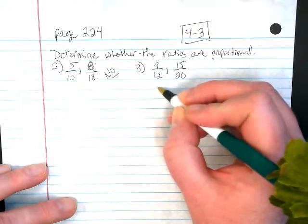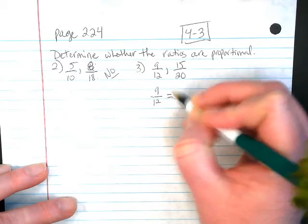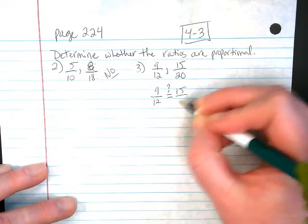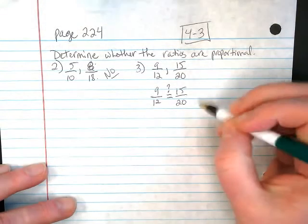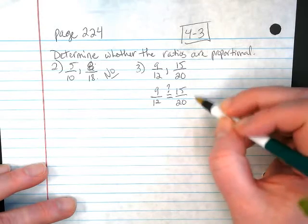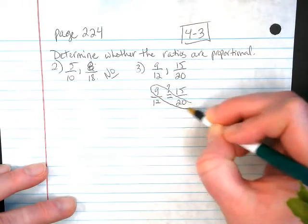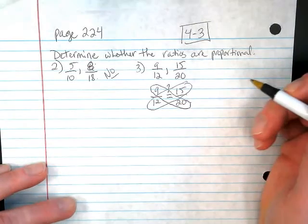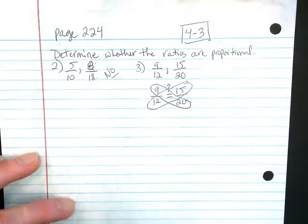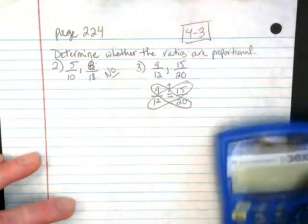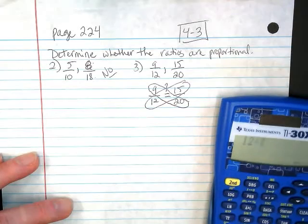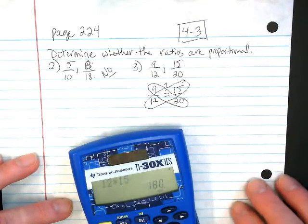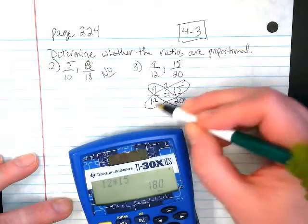If these are a proportion, and we don't know yet, we don't know if these are equal, that's why I'm going to put a question mark there, then I should be able to do what's called cross-multiply. I should be able to multiply these two numbers and these two numbers and have them come out the same. So, using your calculator, what is twelve times fifteen? I got one hundred and eighty for twelve times fifteen.